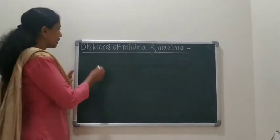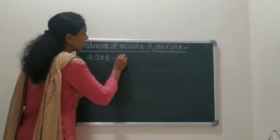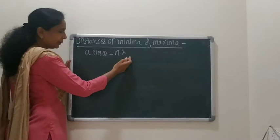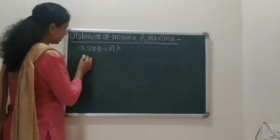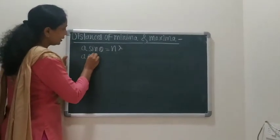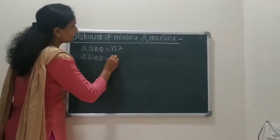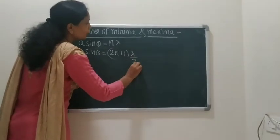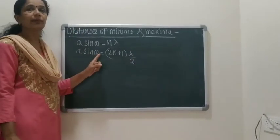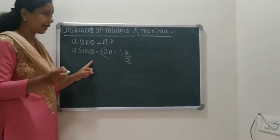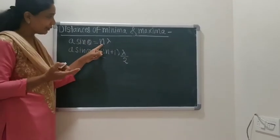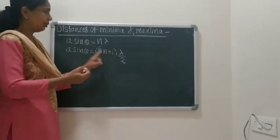The equations are: a sin θ = nλ for minima or the nth dark fringe. Next, a sin θ = (2n+1)λ/2 for the nth bright fringe. These are the path differences between the extreme rays at the position of the nth dark fringe and nth bright fringe.